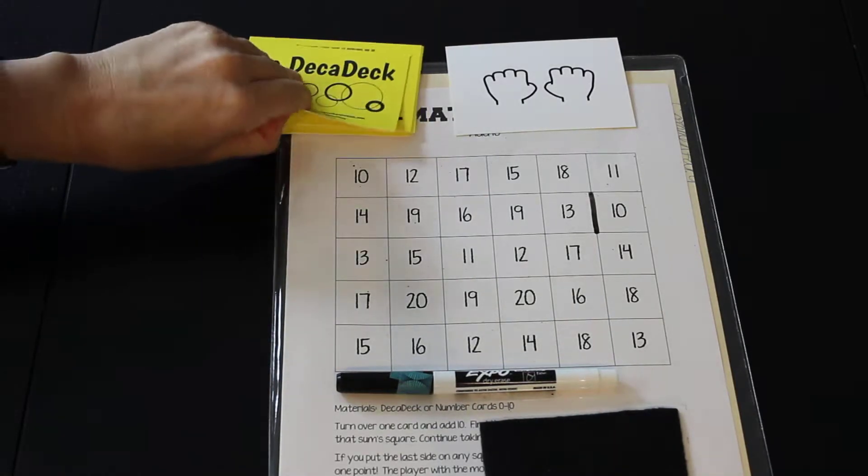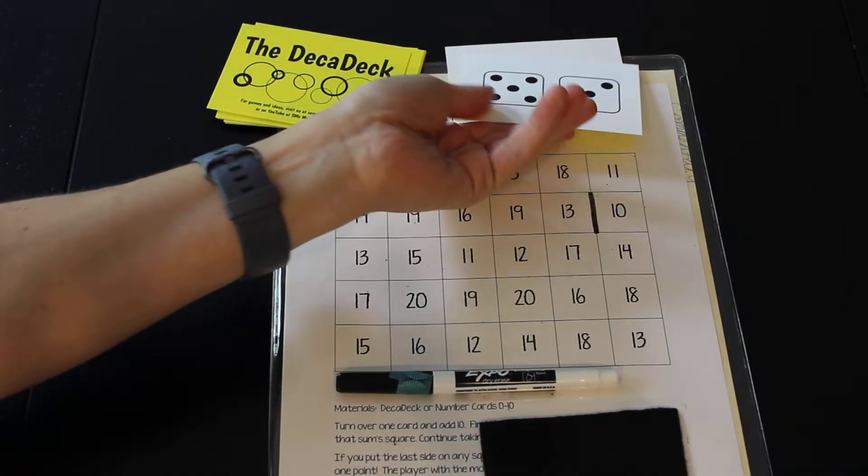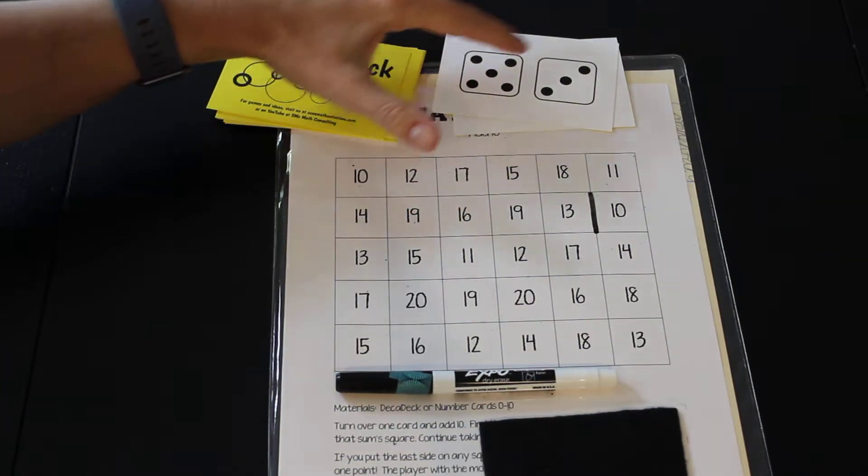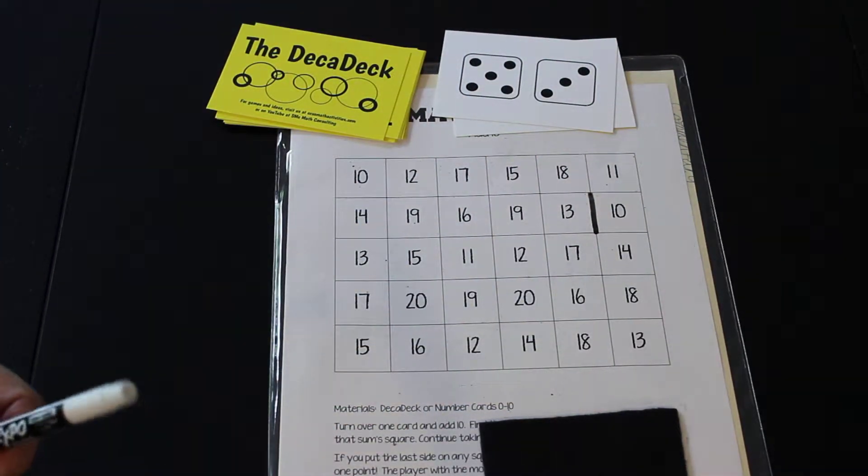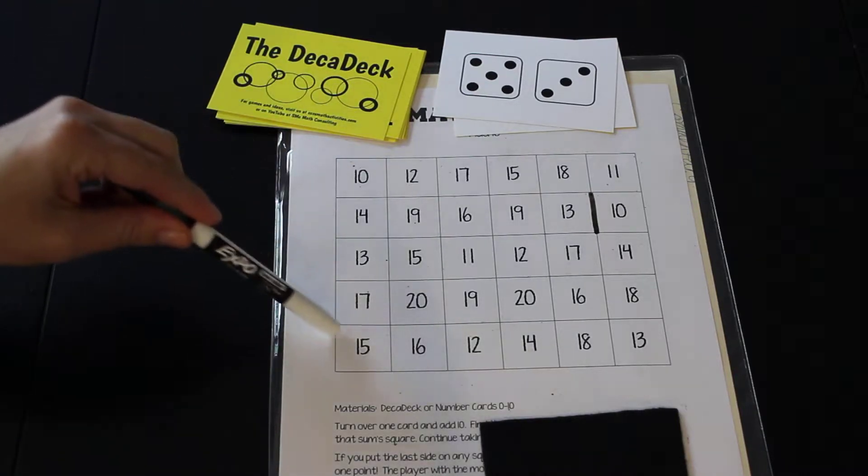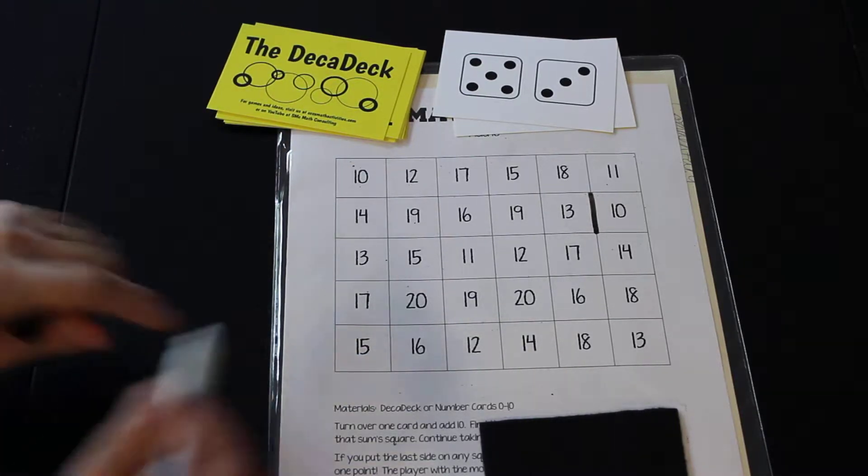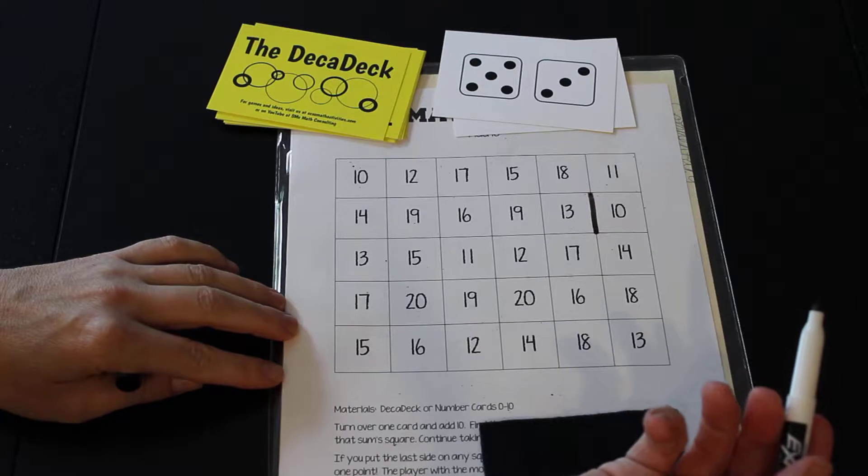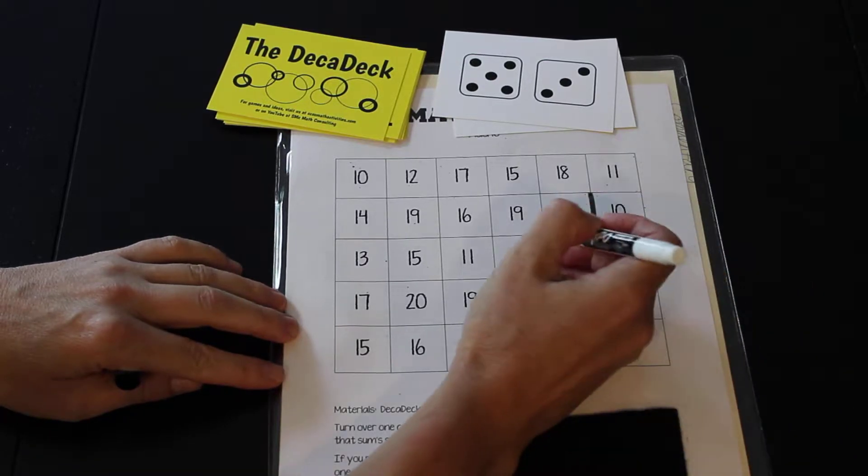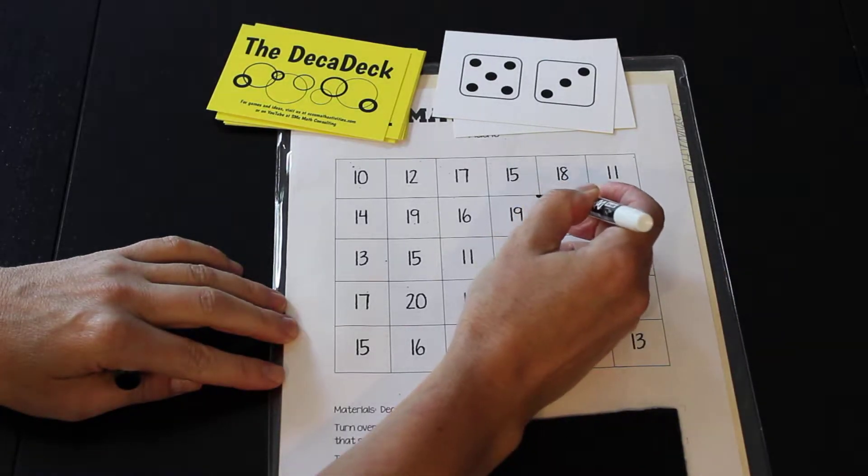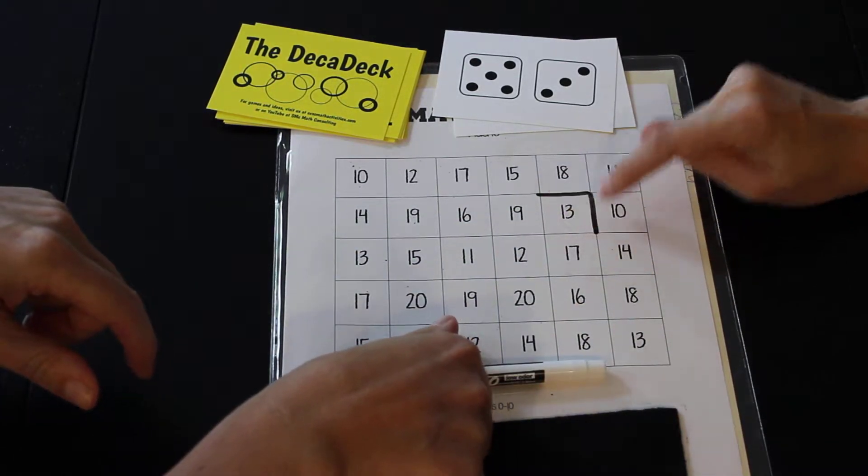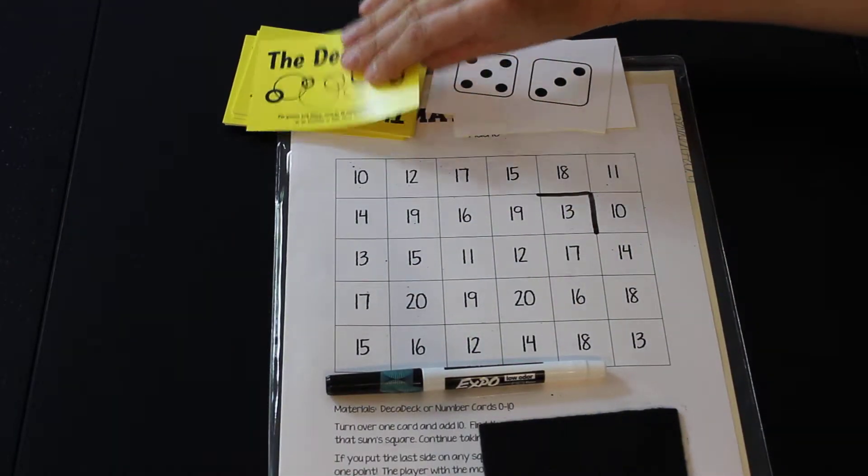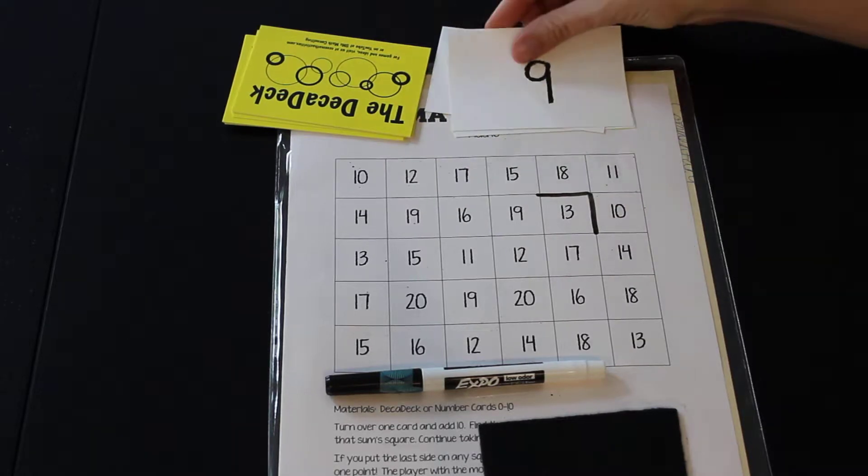Okay, let's see what I got. I have an eight because five and three more make eight, so I have to say eight plus 10 is 18. And I'm going to look around here for an 18 where I can color one side, and I choose to color this side right there. Oh, that's cool because you're getting close to being able to make a box there. If you finish all four sides you get to claim the box.